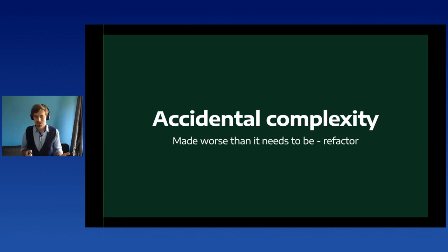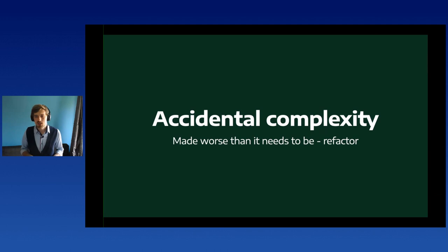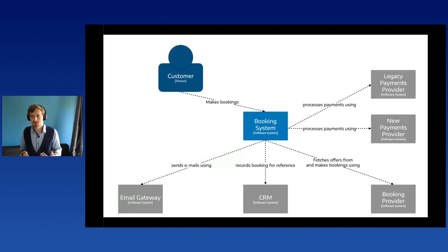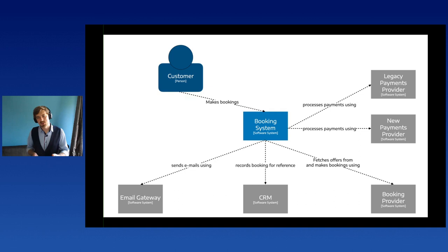These things mostly contribute to so-called accidental complexity — the code could be better, and refactoring can fix it. But if we look at the system again, there are pretty many other systems to cooperate with: two payment providers, a booking provider, an internal CRM, and an email gateway. It will just be complex because there are a lot of moving parts.